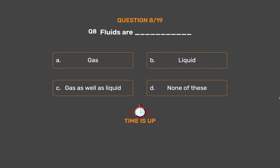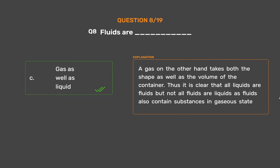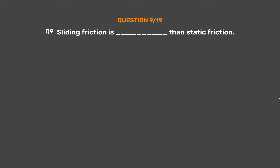The correct answer is Option C: Gas as well as liquid. A gas takes both the shape as well as the volume of its container. Thus it is clear that all liquids are fluids but not all fluids are liquids, as fluids also contain substances in gaseous state.